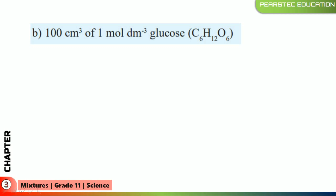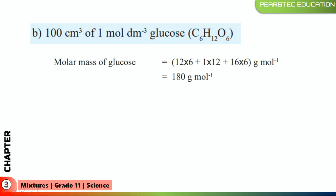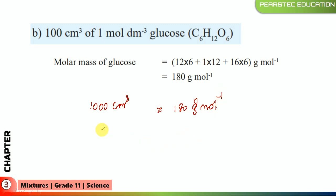Next: 100 cubic centimeters of a 1 mol per cubic decimeter glucose solution. We need to find the molar mass of glucose. The molar mass of glucose is 180 grams per mole, which applies to 1000 cubic centimeters.